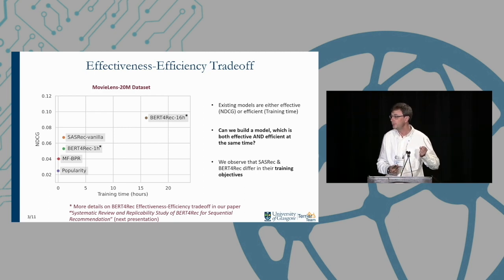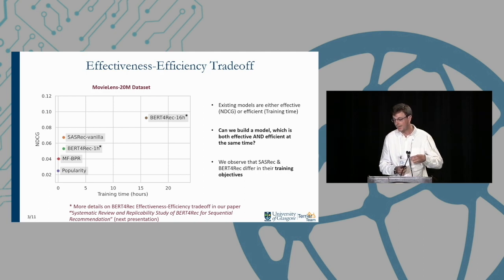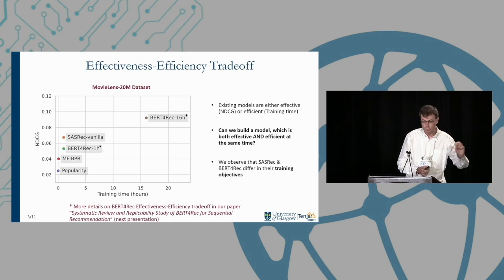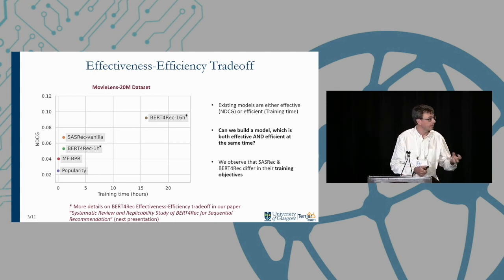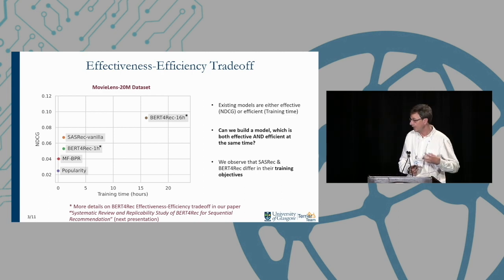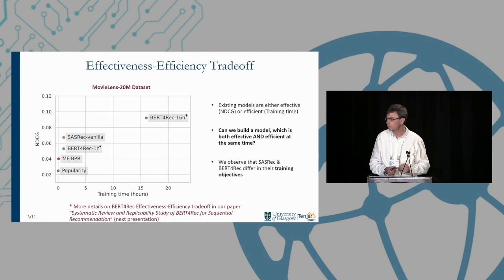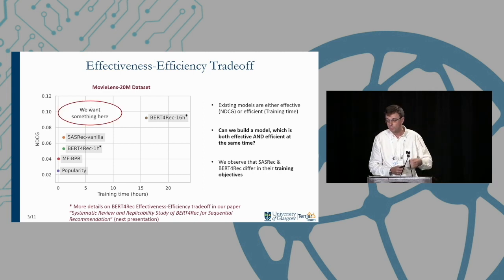These transformer-based models are effective, but they can also be challenging or inefficient to train. On this graph we show the training time for a number of these models as well as their effectiveness in terms of NDCG. A popularity model trains instantly; BPR very quickly; SASRec takes about an hour; but a fully converged BERT4Rec model needs 16 hours. We wanted to find a model that was both efficient to train and effective.